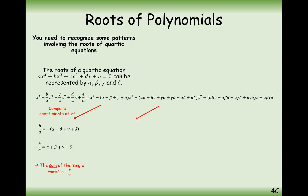For the coefficient on the x squared term, it's going to be c over a equals the sum of the doubles, which is what we've seen before.